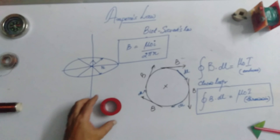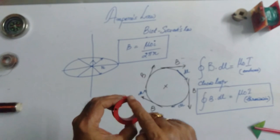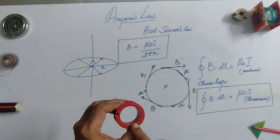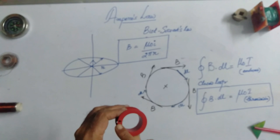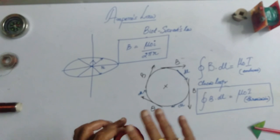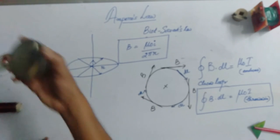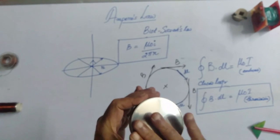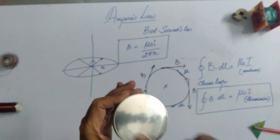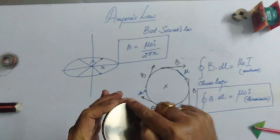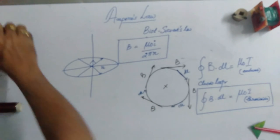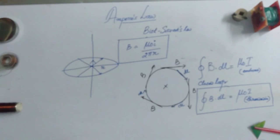In Ampere's circuit law, you have to take a closed path and attach a surface to it. This loop can be attached to a flat surface, or this can also be an open surface attached to the loop.